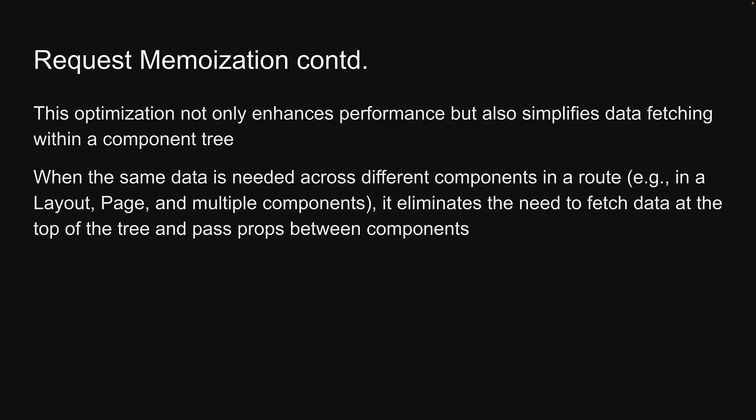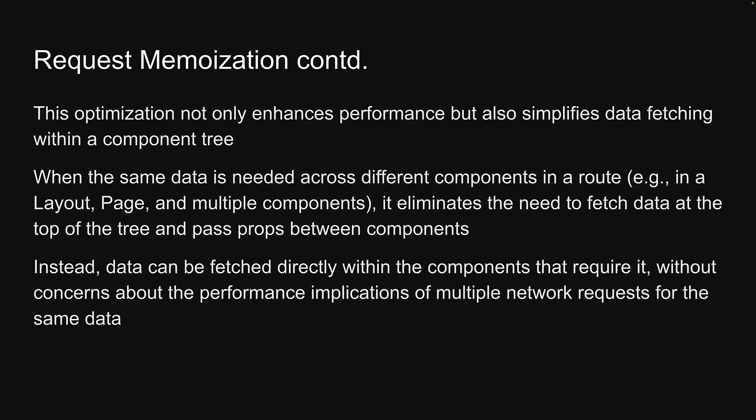When the same data is needed across different components in a route — for example, a layout, a page, and multiple components — it eliminates the need to fetch data at the top of the tree and pass props between components. Instead, data can be fetched directly within the components that require it, without concerns about the performance implications of multiple network requests for the same data.